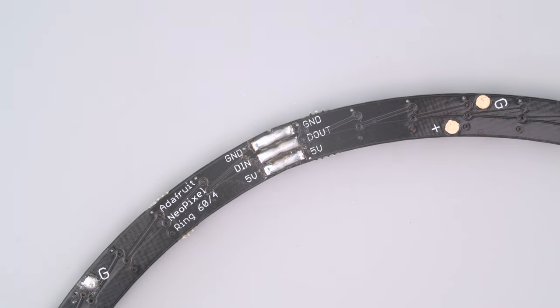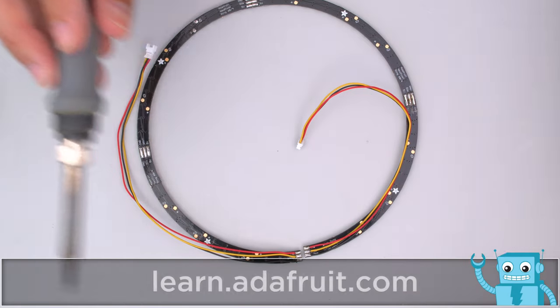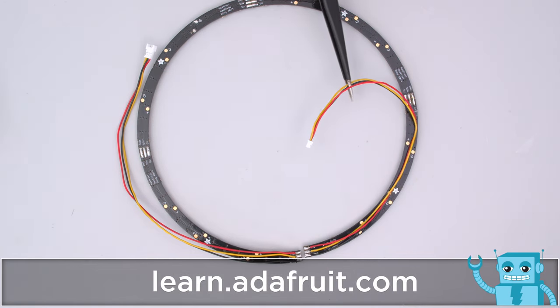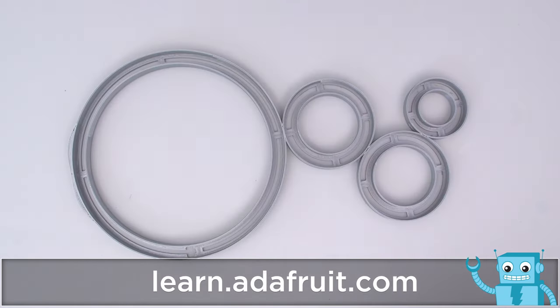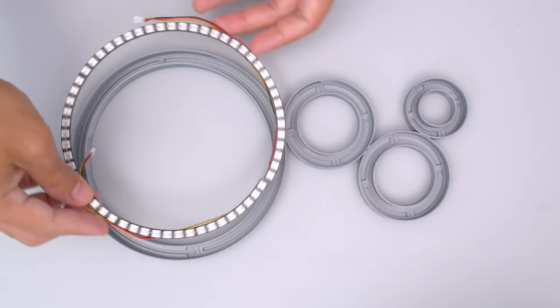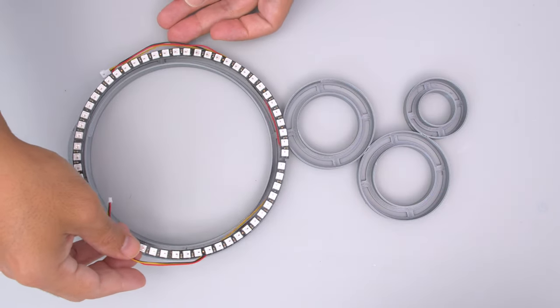The 60 neopixel ring is four quarter-sized PCBs that are soldered together using lots of solder. Be sure to check out the learn guide for a full step-by-step tutorial on wiring up these neopixels. The rings are pressed into their specific spots with the wiring coming out of the slots.